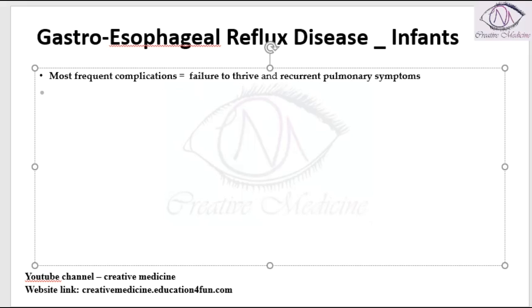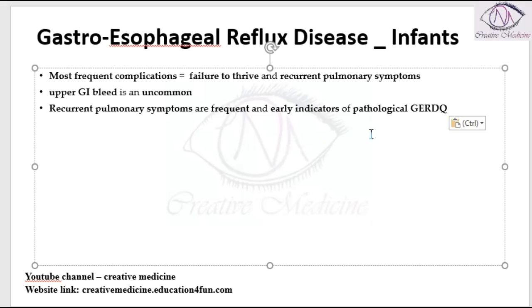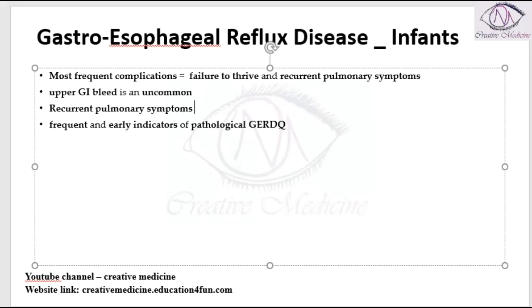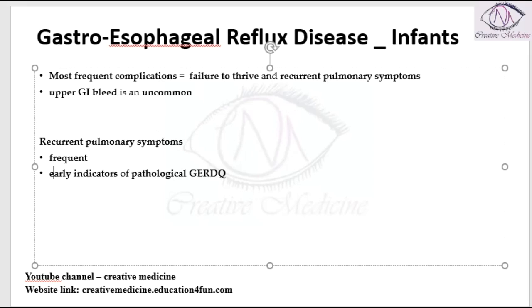Upper GI bleeding is uncommon in infants with gastroesophageal reflex disease, and sometimes the presence of recurrent pulmonary infection is the early indicator of gastroesophageal reflex disease. If the patient has recurrent pulmonary symptoms that are frequent, these are the early indicators of the pathological gastroesophageal reflex disease.